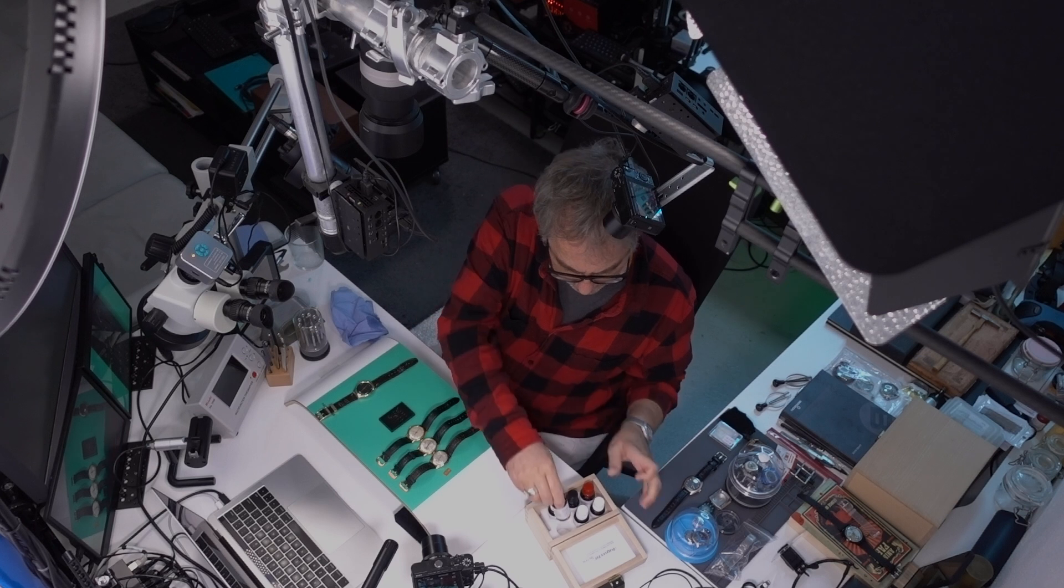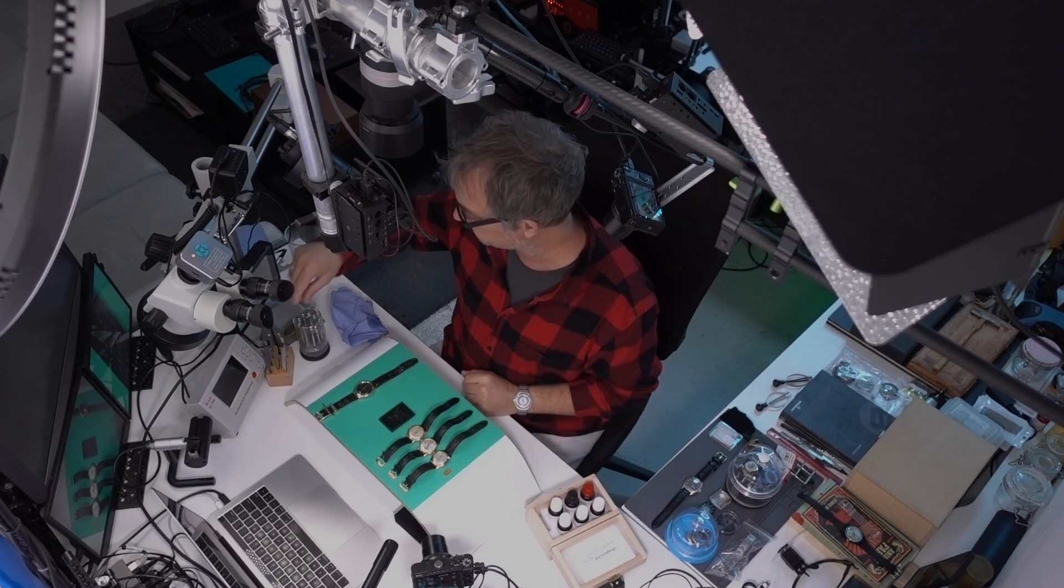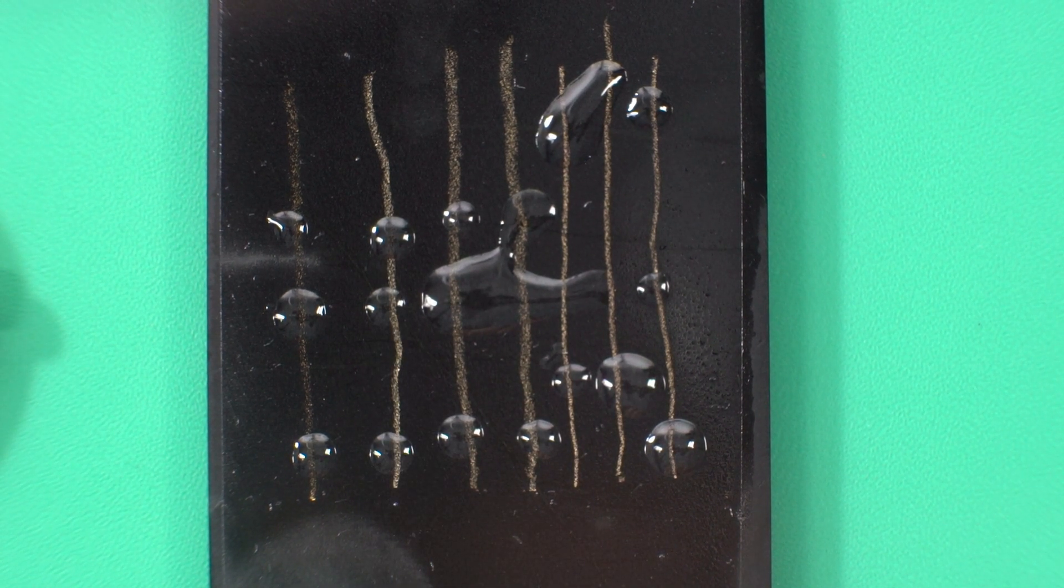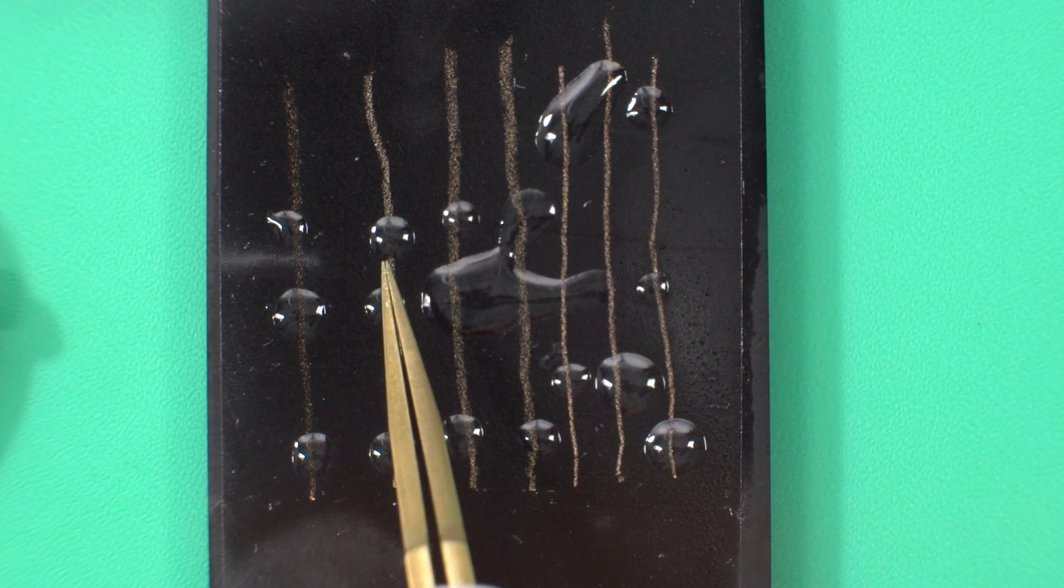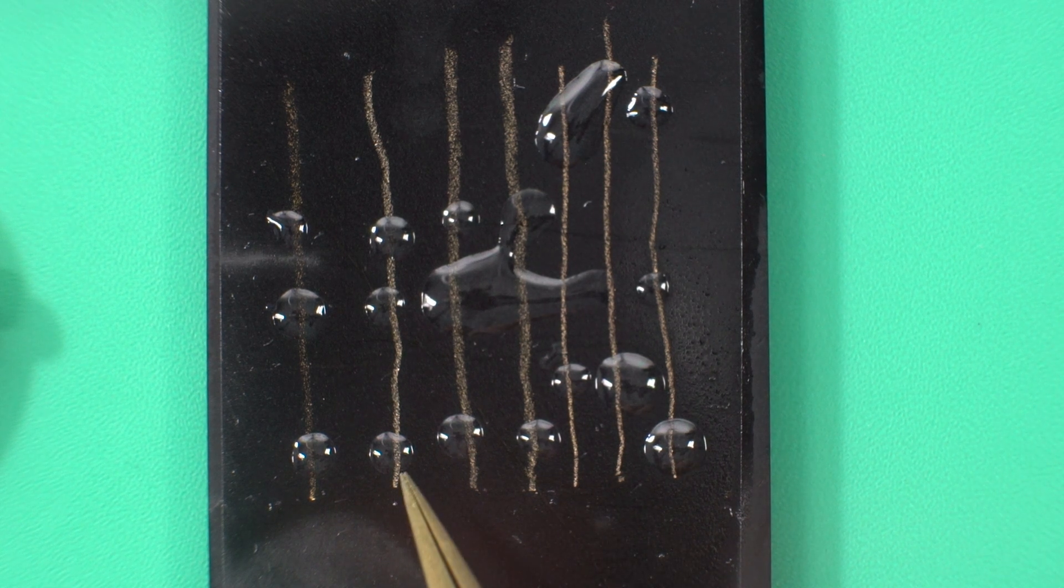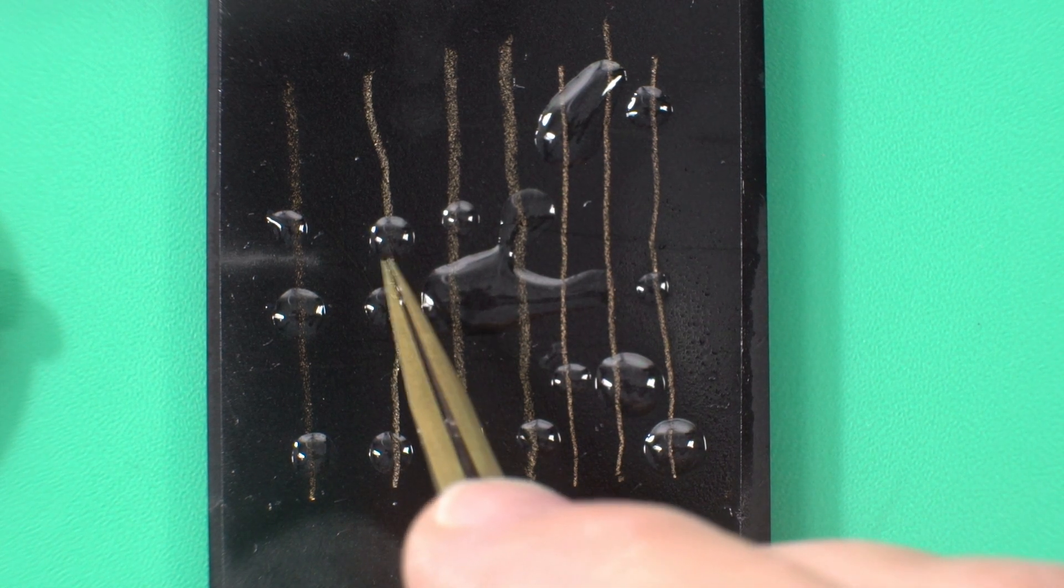So you can see already the Eterna, the 14 carat, that's going away because that is 14 and we put the acid for 18 on it. So that means 8 yes, 14 yes, 18 no.